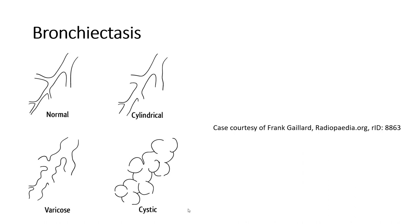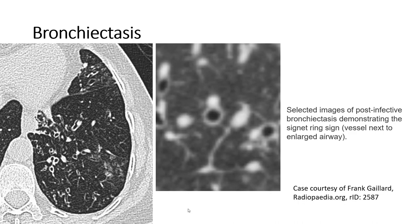There are several forms of bronchiectasis: cylindrical form, varicoid form, and cystic form. In this case of bronchiectasis on axial CT, we can see the classic signet ring sign, with the dilated bronchus adjacent to the accompanying vessel next to the enlarged airway.